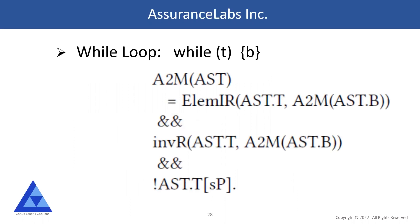For the while loop, I generate the elementary invariant relation — which says either the loop does not execute at all, or if it executes at least once then s satisfies T and s' is in the range of T ∩ B. Then we call InR, which is the relation stemming from the pattern matching algorithm described earlier; we give InR the condition of the loop, the A2M of the loop body, and the negation of condition T of sp.